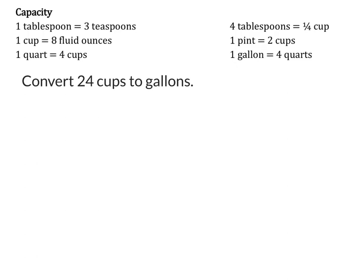Hey guys, this is Mr. Sal. We're going to be looking at some examples that students have emailed me that they have questions on, such as this one. So it says to convert 24 cups to gallons. Now, one thing we notice on the chart that we're given is that there is no direct cups-to-gallons conversion. I see that I can convert gallons from quarts, and in relation to that, I also have a cups-to-quarts conversion factor.